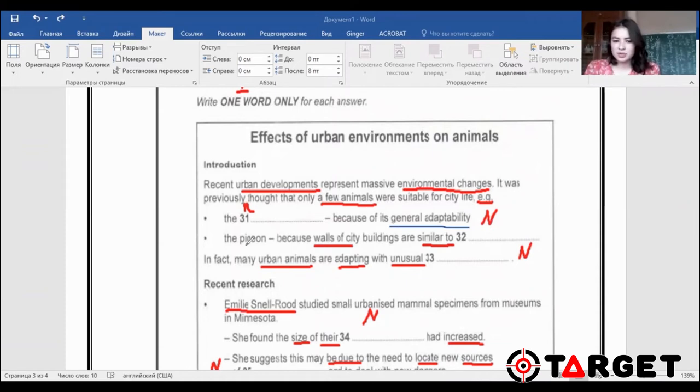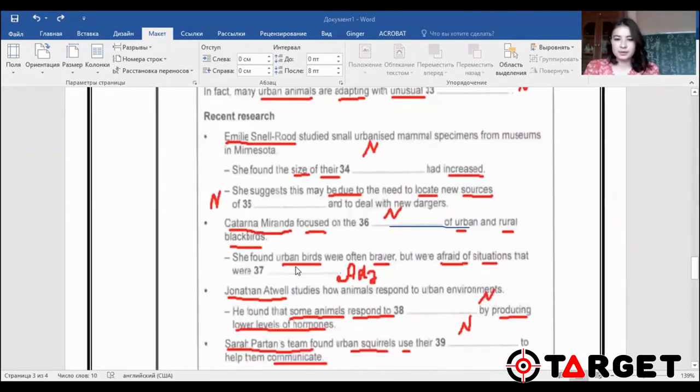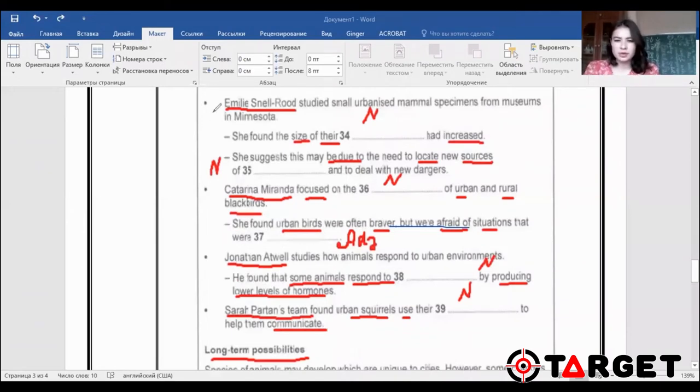The pigeon, so second example is pigeon, because walls of the city buildings are similar to something. Again, I'm going to put a noun. Next, in fact, many urban animals are adapting with unusual something. You see here, there is no article. That's why probably this noun will be uncountable. Let's get further. Recent changes of the word. So Emily Snell studied small urbanized mammal specimens from museums in Minnesota. Why did I underline it? In order not to lose the link in part four because it's difficult. And some students may get confused. They may lose the link. And once you lose the link, you may easily lose the answer because you're not following the speaker anymore.